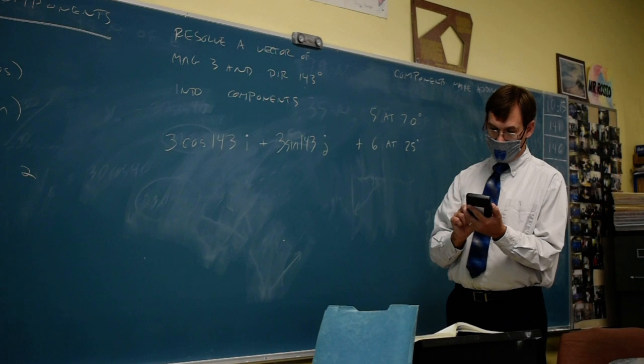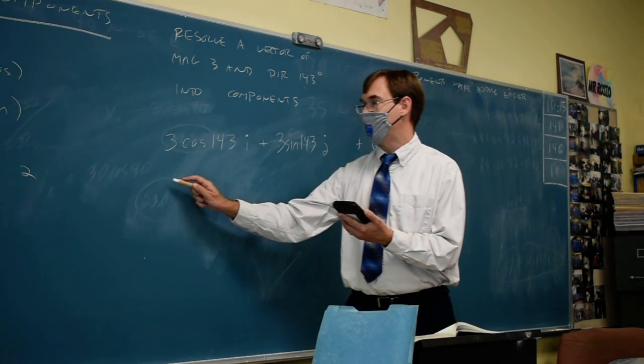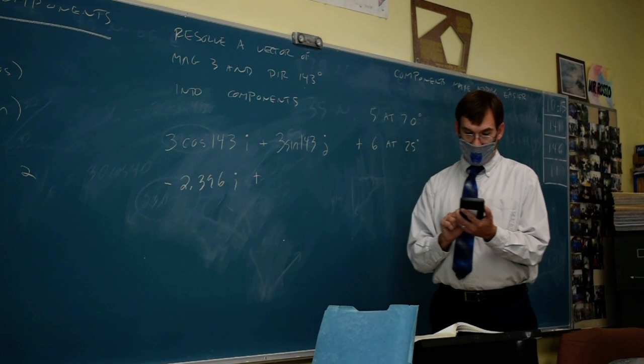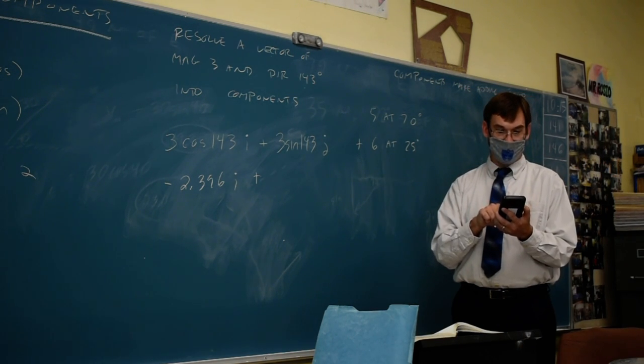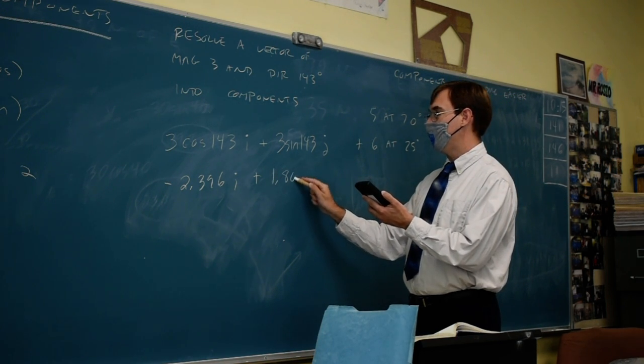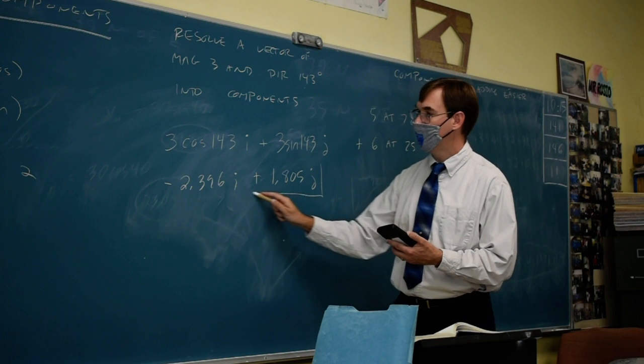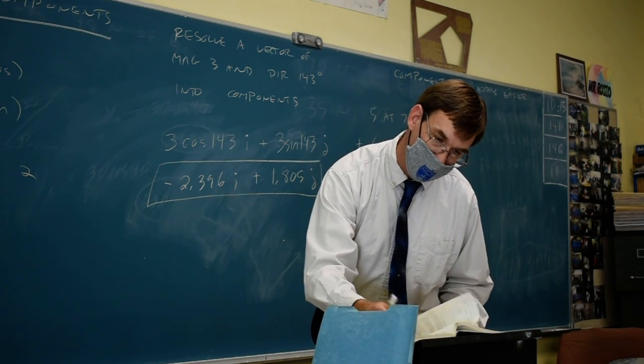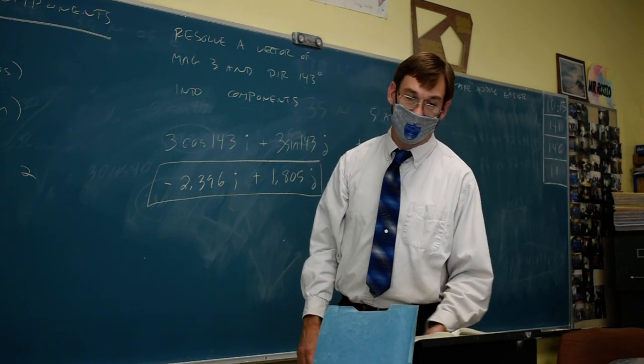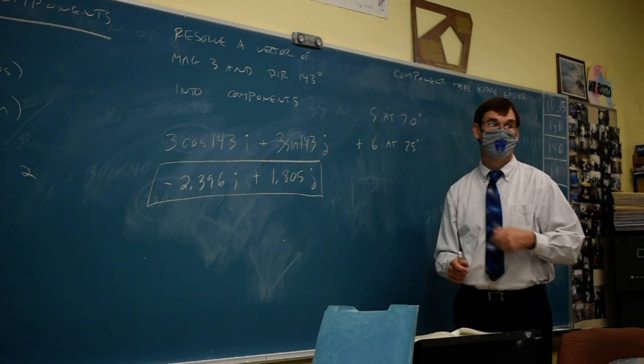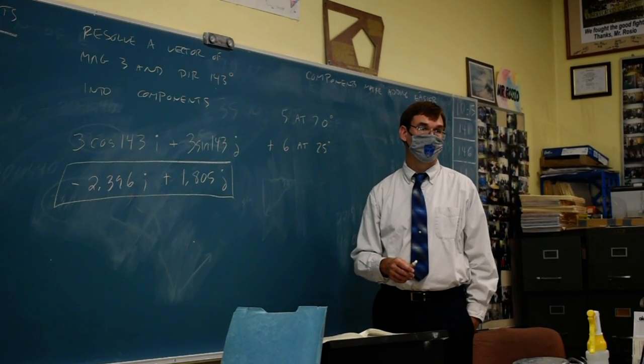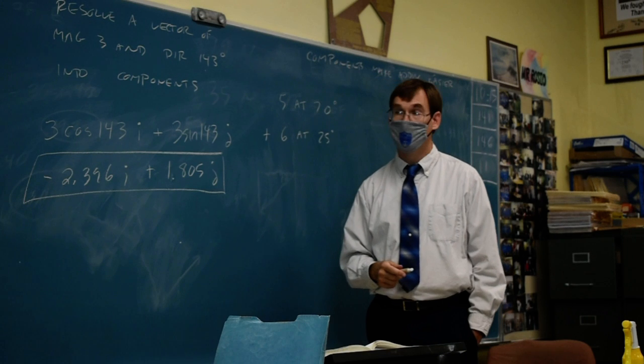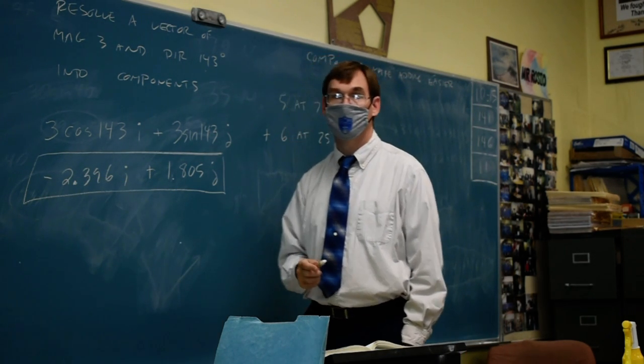Calculator is my friend. So when we punch three cosine 143, I'm saying negative 2.396i. And then the old second entry trick is nice, just swap cosine for sine. I'm saying 1.805j, and that's it. That's all we're doing for the first four problems. Is that a decimal point? Yes.